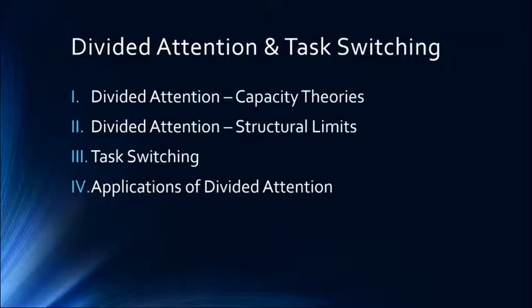We'll start off by talking about capacity theories of dividing attention. The basic idea is you can divide your attention so long as you never exceed available resources. There's a finite capacity, and if you exceed that, something's going to suffer. The structural limits view has to do with what you are trying to divide your attention between — reading and listening to a lecture at the same time, or trying to take lecture notes while reading text messages or Facebook, are particularly difficult. We'll talk then about task switching and switch costs, and finish with applications including distracted driving and distracted walking.